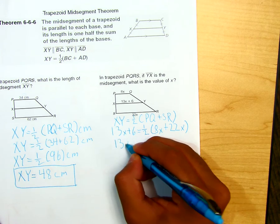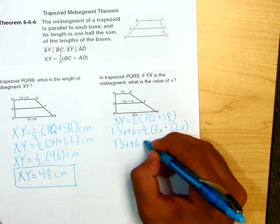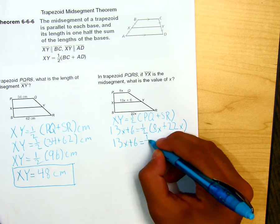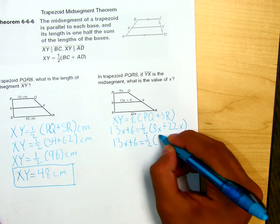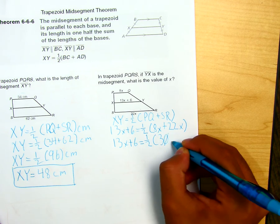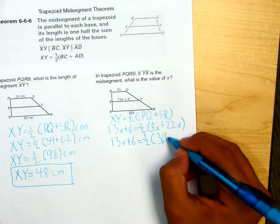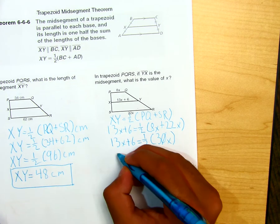Next step, you would put 13x plus 6 equals 1-half, 30x. Looks kind of sloppy. Sorry.